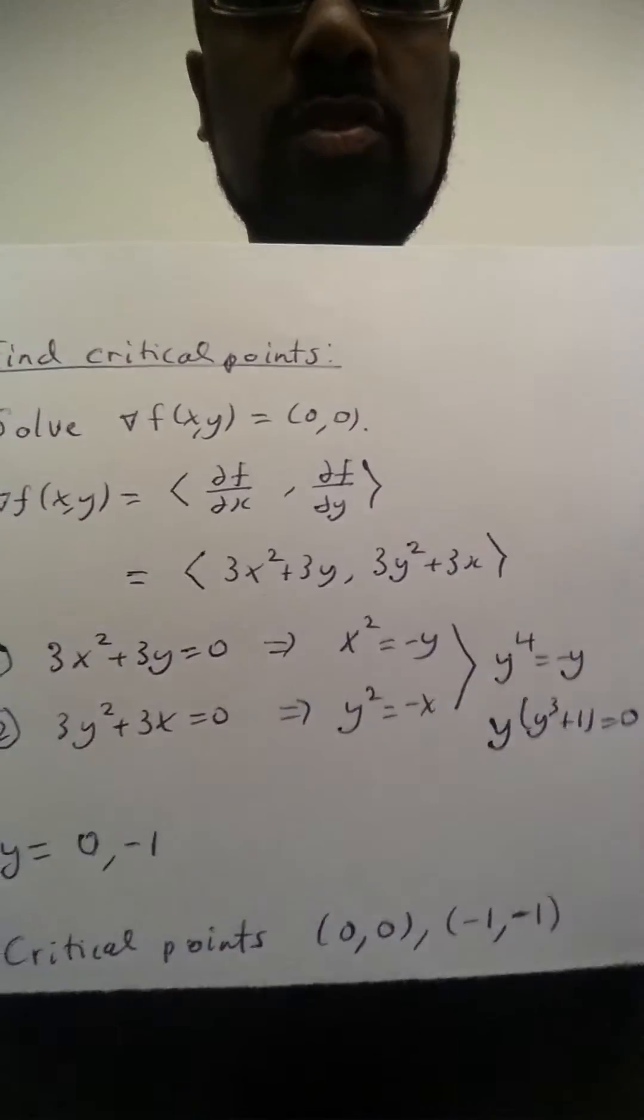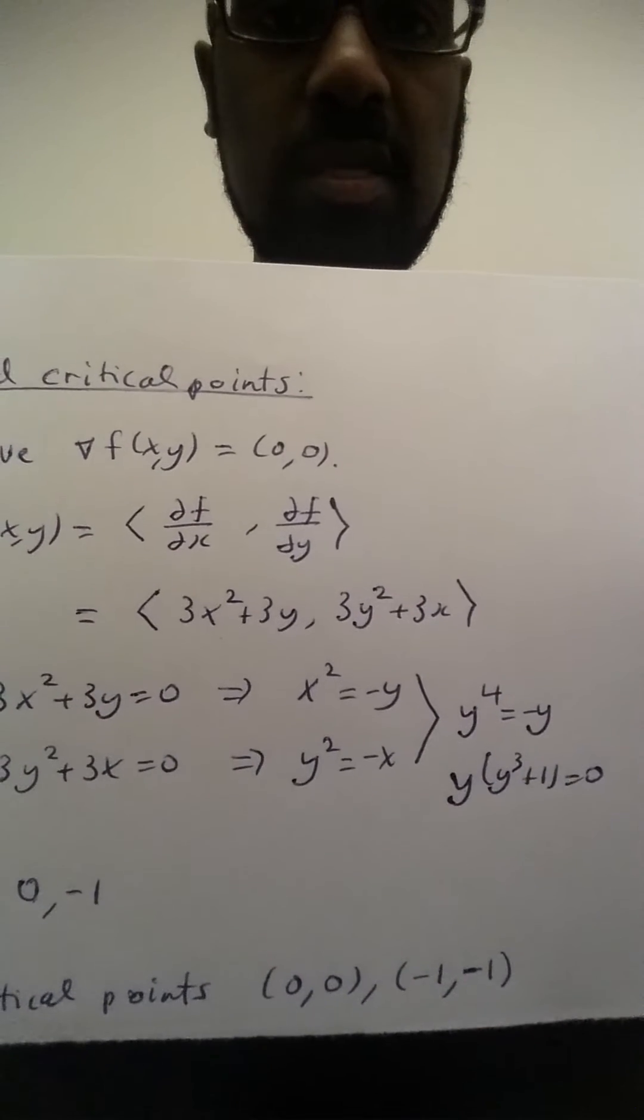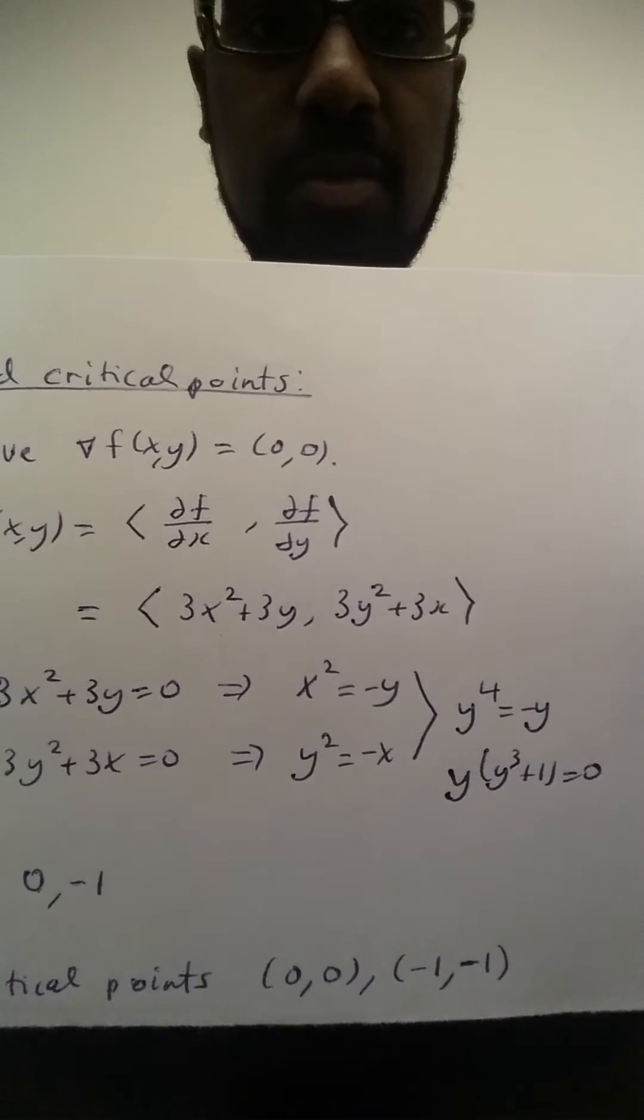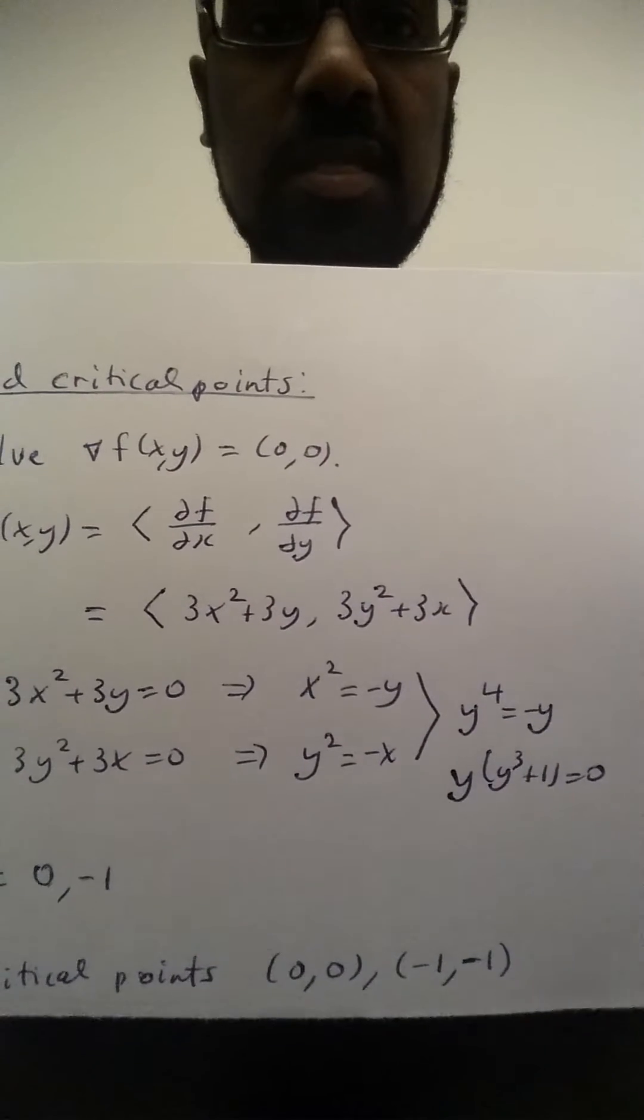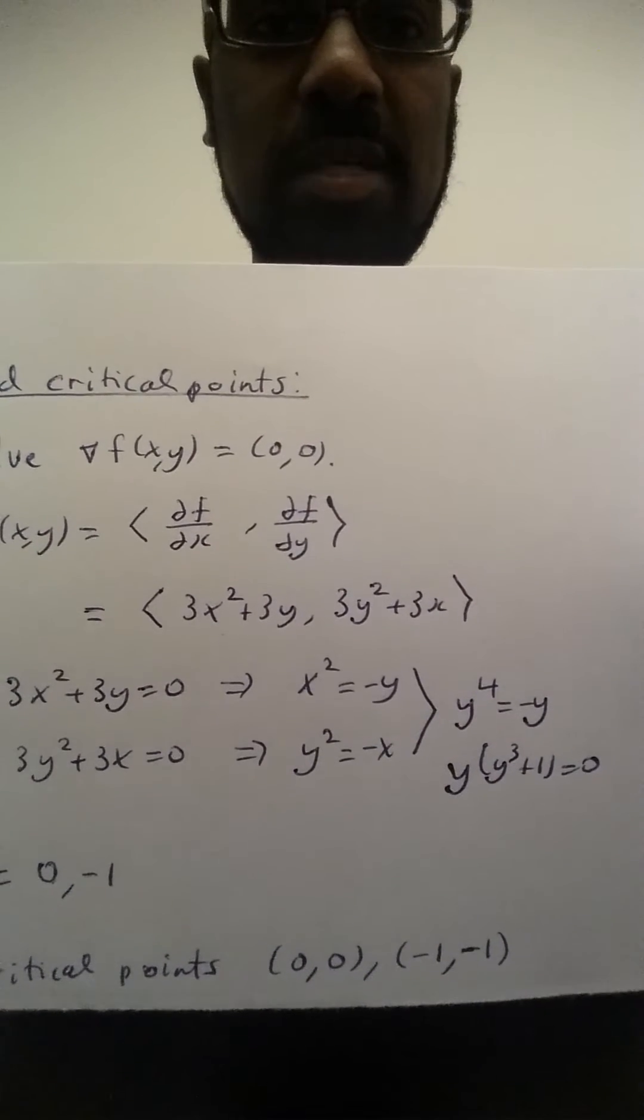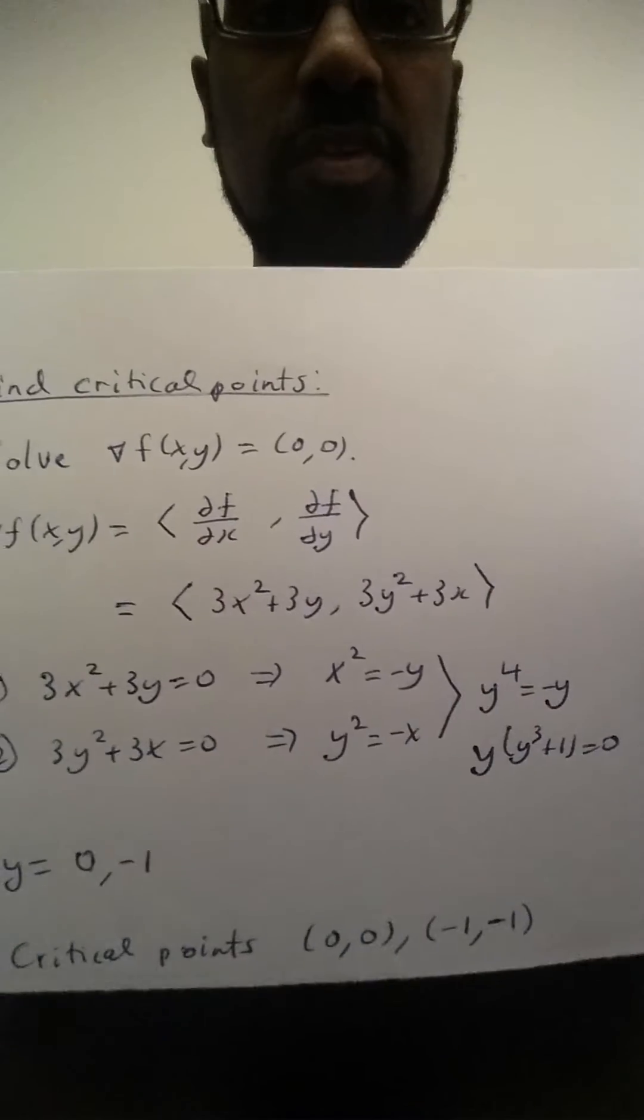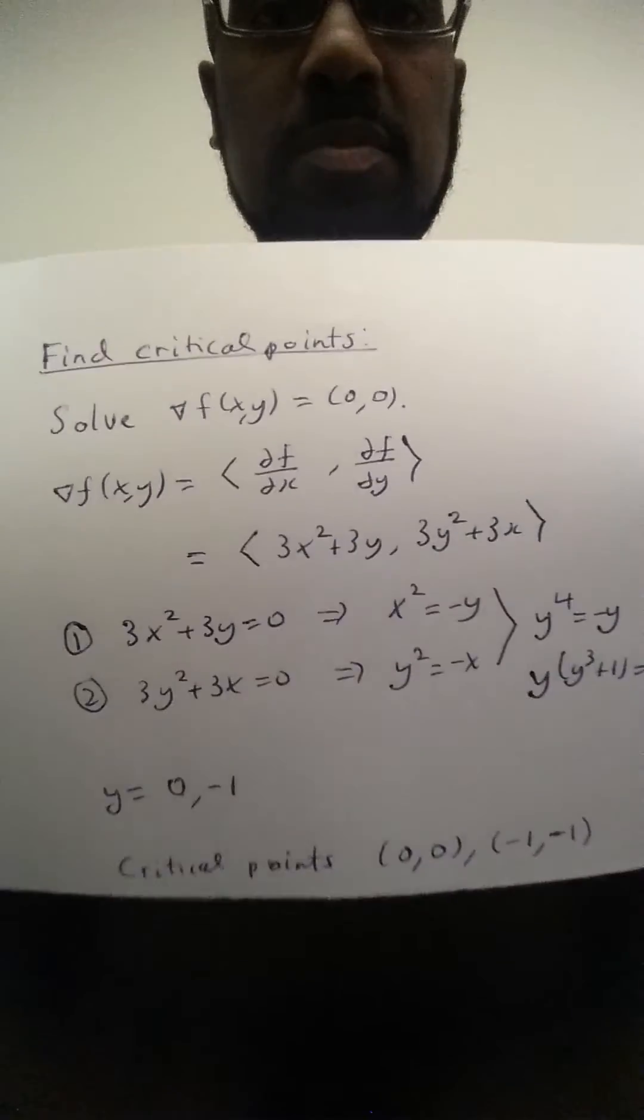Okay, so here the partial derivative is 3x squared plus 3y, the partial with respect to x, and the partial with respect to y is 3y squared plus 3x. If we set this to zero we get a system of two equations.